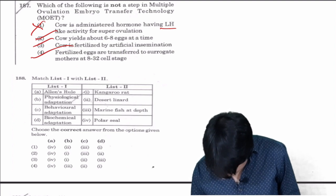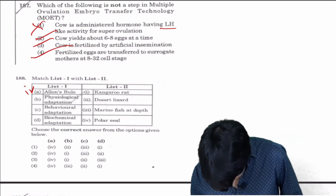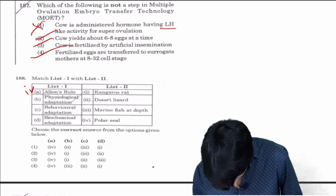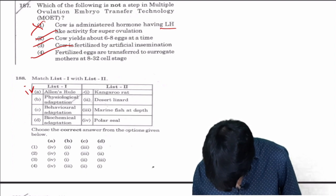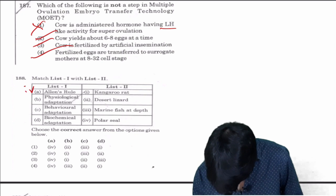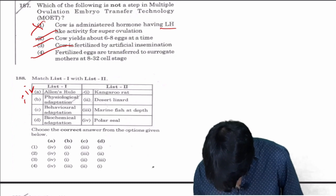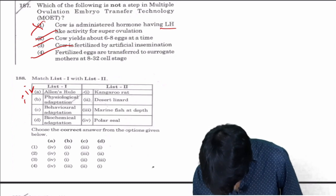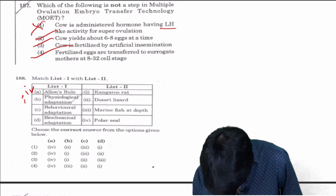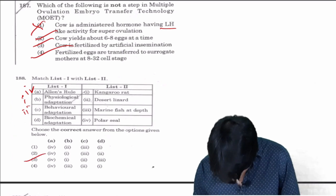Allen's rule is for polar seal, fourth. Physiological adaptation is marine fish at depth or kangaroo rat, take one. Behavioral adaptation is desert lizard, take it as two. Biochemical adaptation is marine fish at depth. So 188 answer is 3, 4, 1, 2, 3.